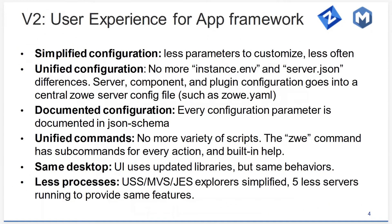The big picture summary: what is the benefit of V2 for users of the app framework? It is mostly around easier installation and configuration. This comes in different shapes such as simplified configuration — there are fewer parameters that need to be customized. It is more automated and more elegant. The configuration is done in fewer places. There used to be two files: instance.env and server.json. We've gotten rid of server.json, so now there's just one place to look: zoe.yaml.